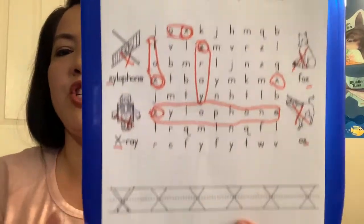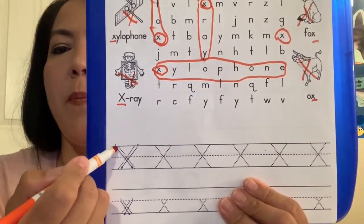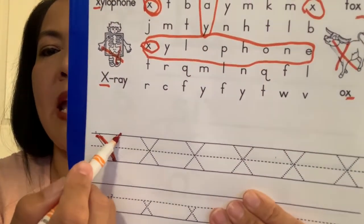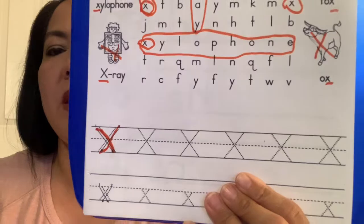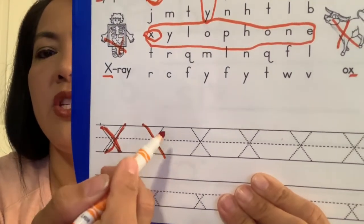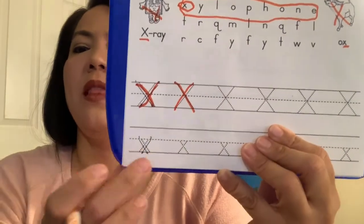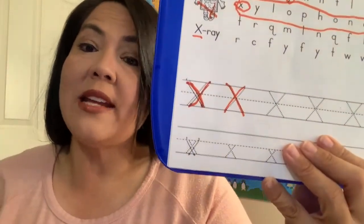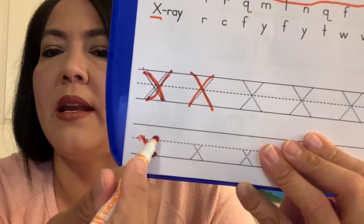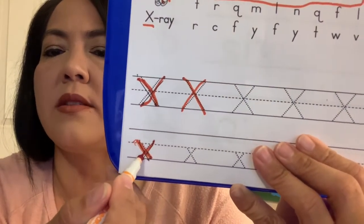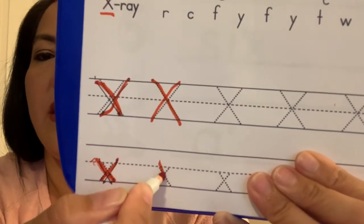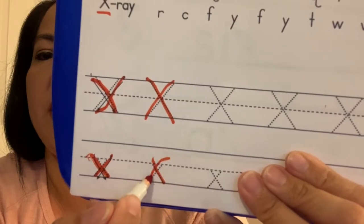I want you to practice your X's down here. We start at the top. Remember for uppercase, go down to the bottom, then start at the very top line again and go down the other side. Let's try that one more time — start at the top line and go down, then start at the top line again and go down the other side. And then lowercase x — can you guys say lowercase? Lowercase x, we start at the little line, which is the middle line. We go down across both sides. Start at the middle line and go down, then come up here and go down on the other side.